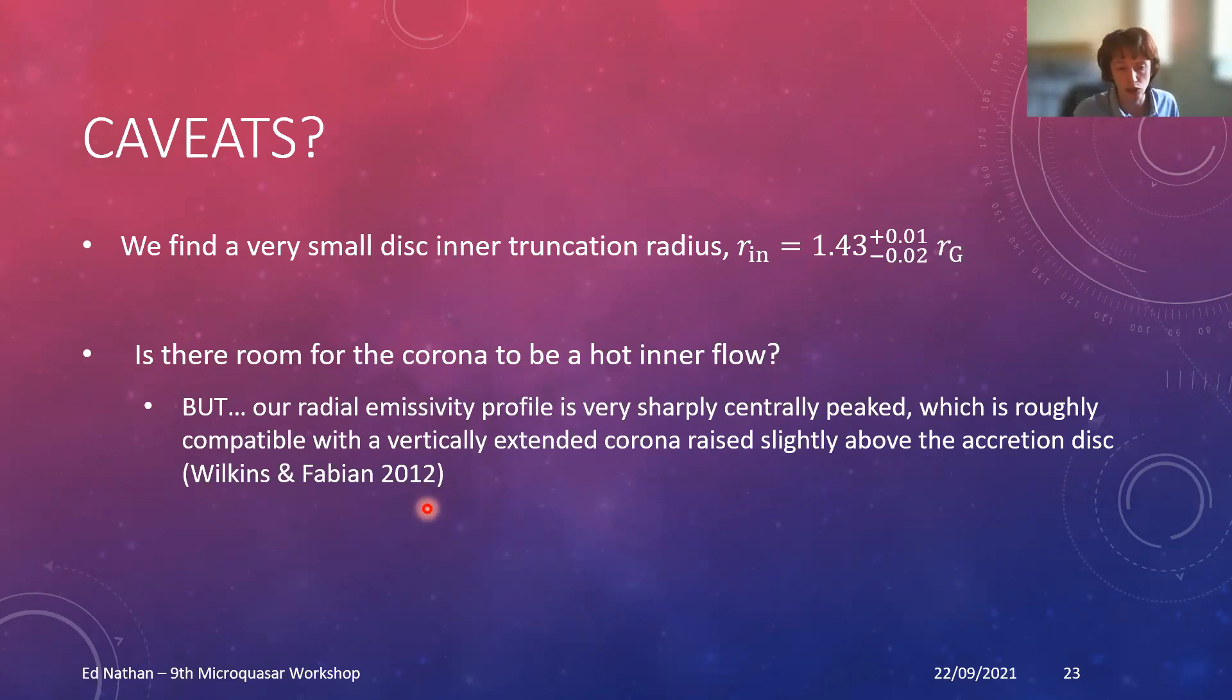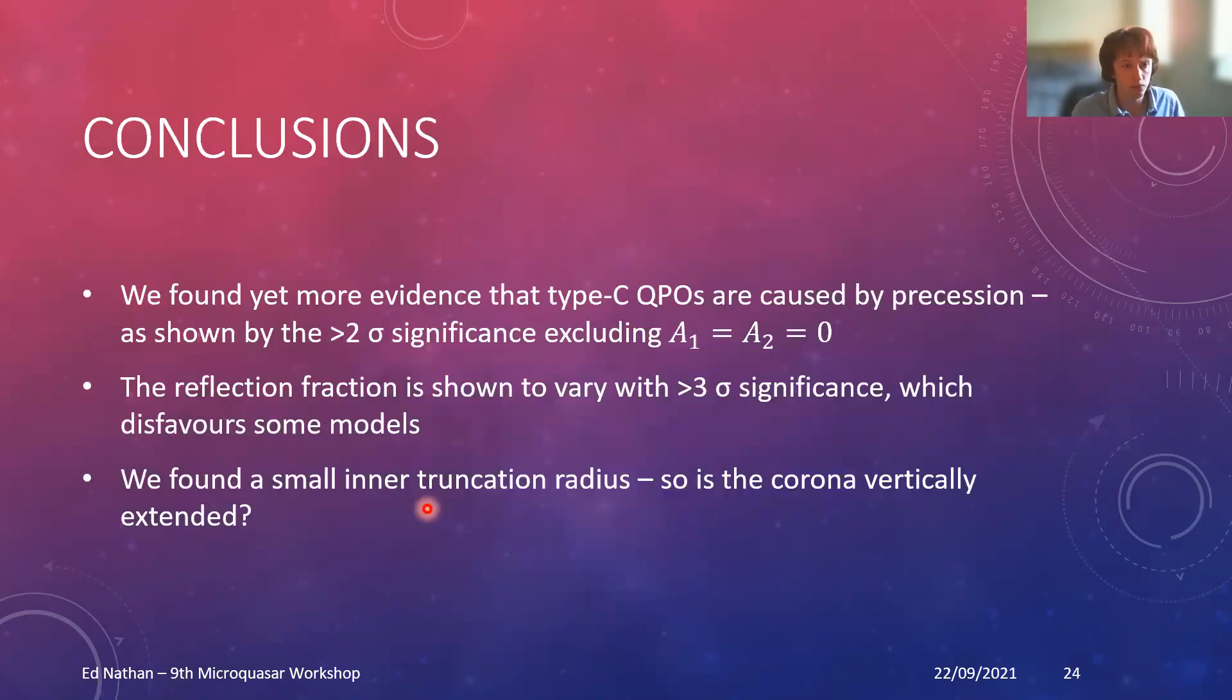If you compare that to Wilkins and Fabian's 2012 paper, that could be compatible with some kind of vertically extended corona which is very slightly above the accretion disc. So potentially the corona could be some kind of a base of a jet or some other vertically extended structure. I think I've got not a lot of time left, so I'm just going to leave my conclusions up for you to read and happily answer questions. Thank you.